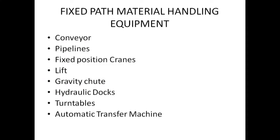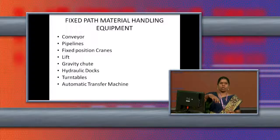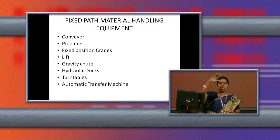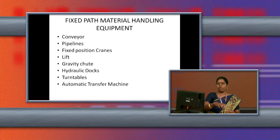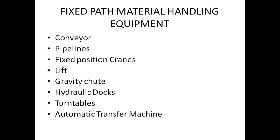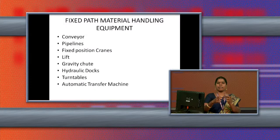The next fixed path equipment is the gravity chute. A gravity chute is a circular way of bringing materials downward — it is fixed in an organization. Materials that are pushed or pulled at the top come downward in a circular way. Next is hydraulic docks.